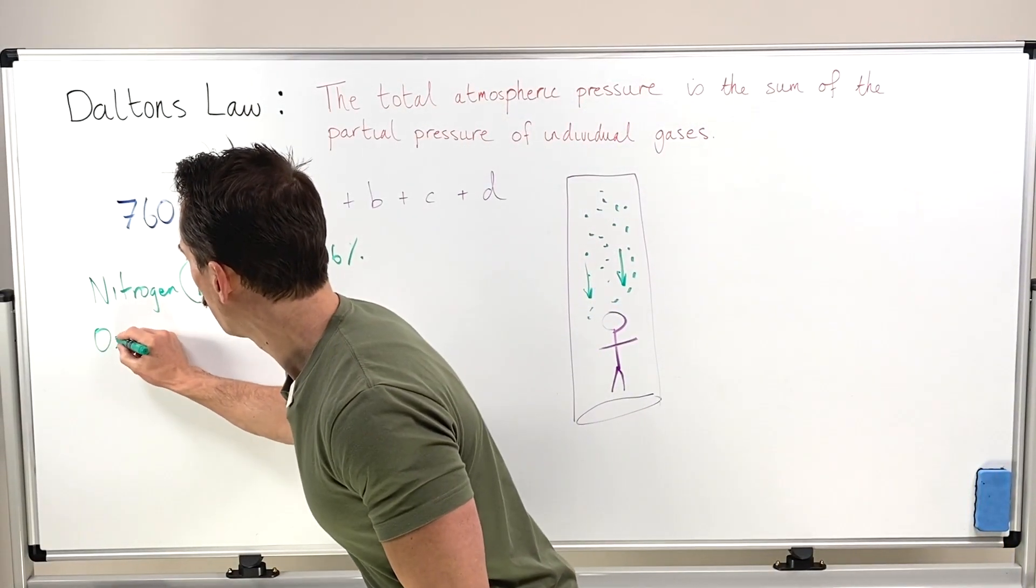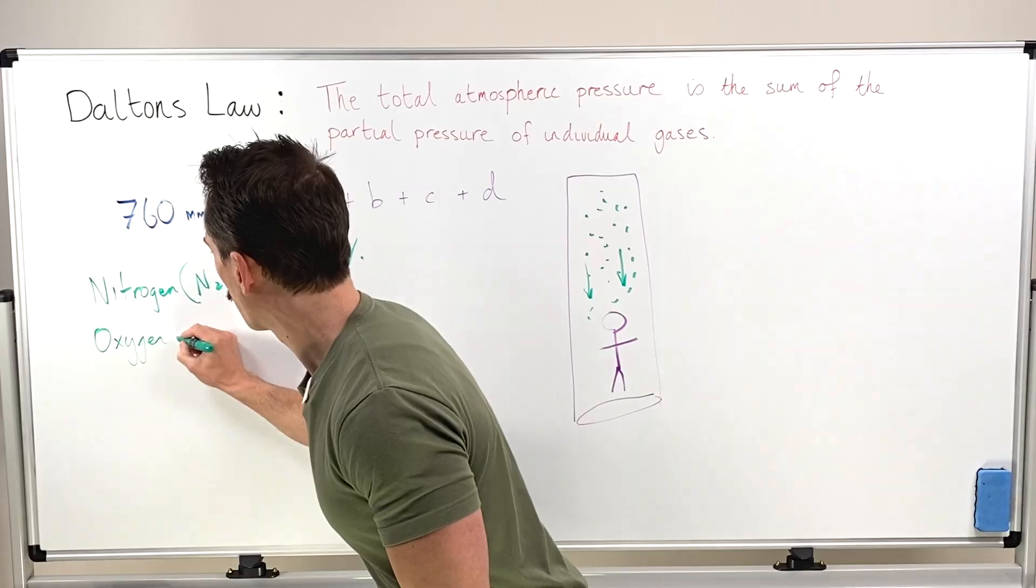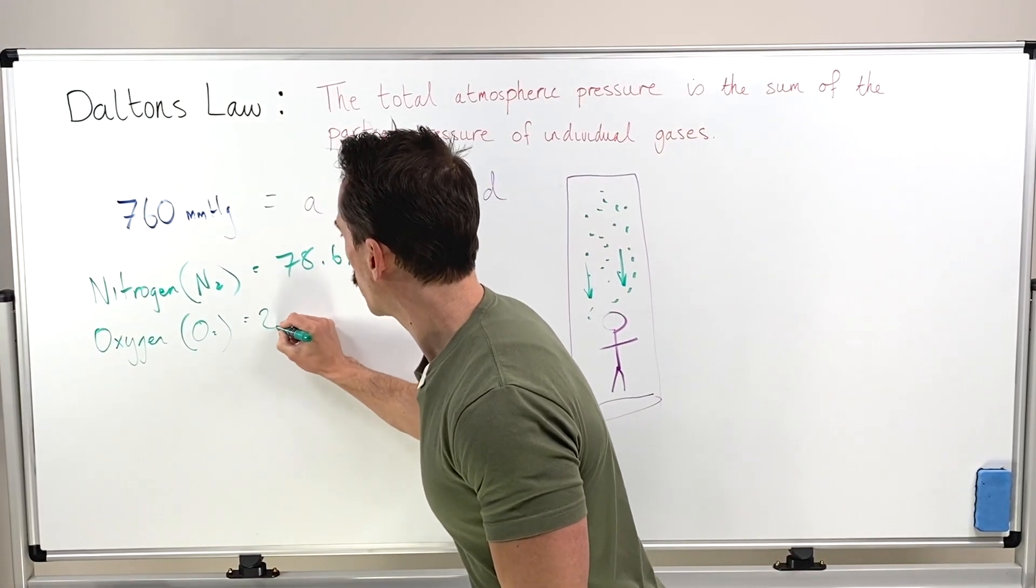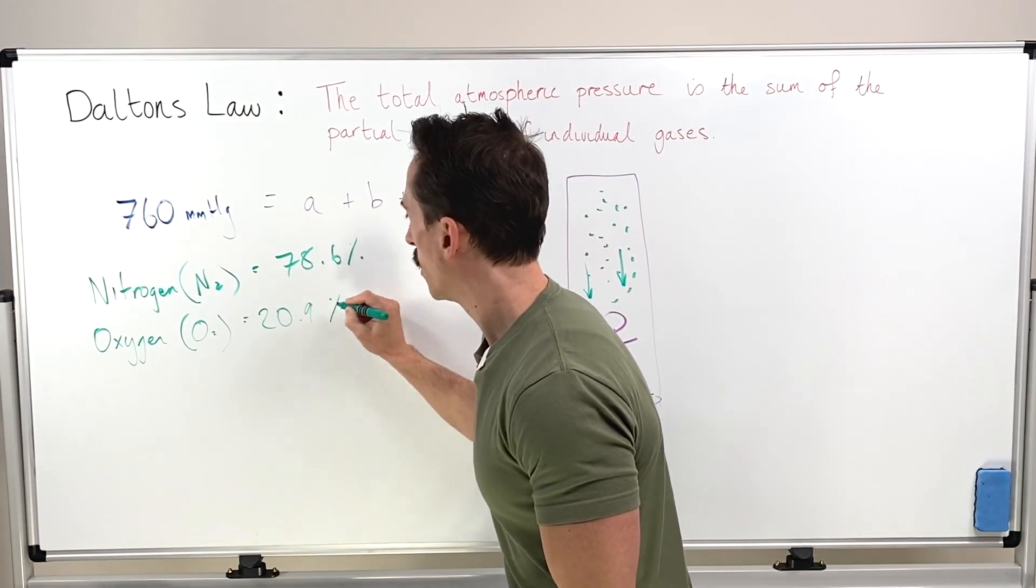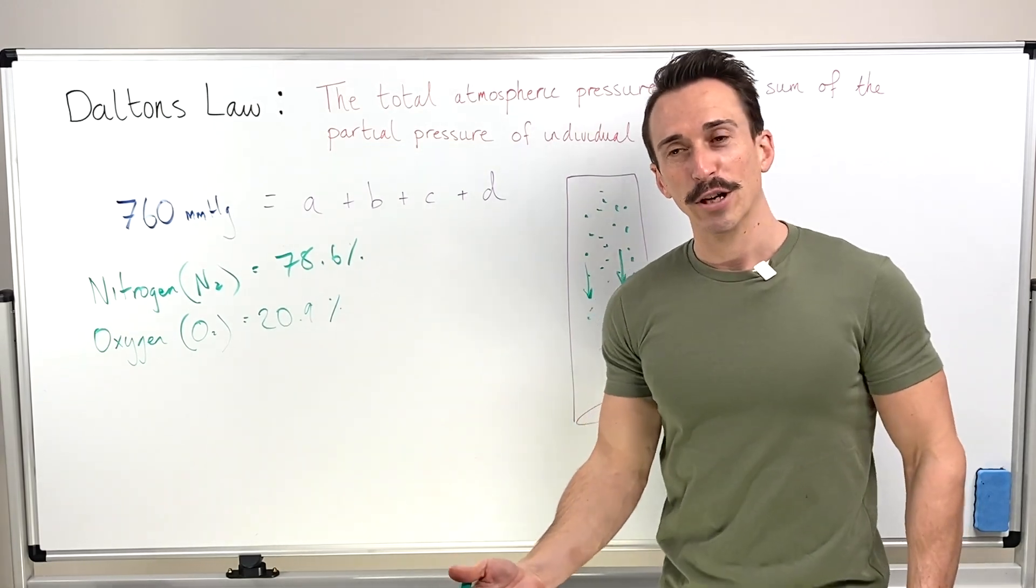Let's take a look at the next, which is oxygen, O2, and that makes up 20.9% of total atmospheric pressure.